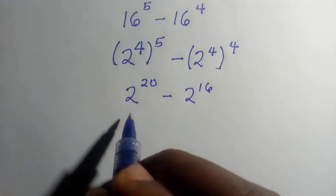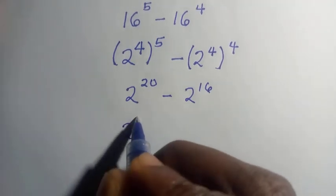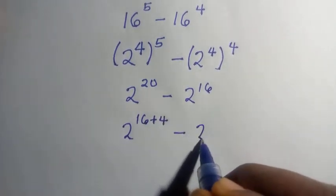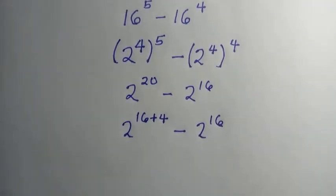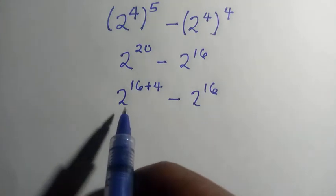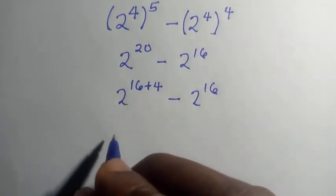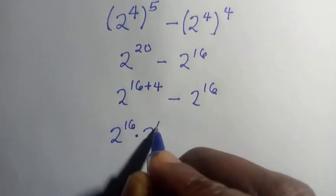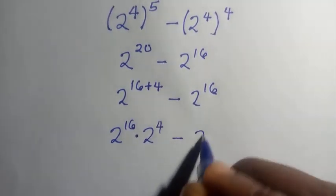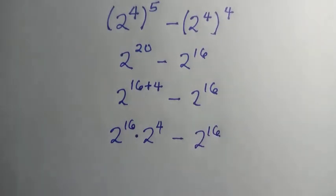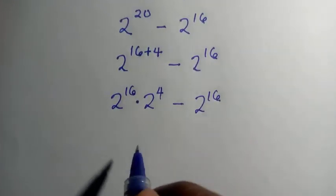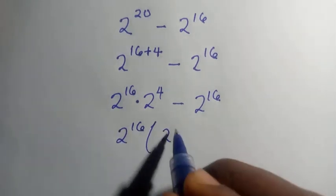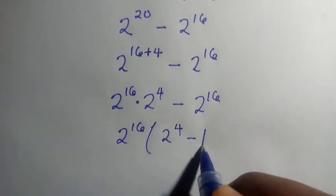We can write 2 to the power of 20 as 2 to the power of 16 plus 4, minus 2 to the power of 16. By the rule of indexes, this becomes 2 to the power of 16 multiplied by 2 to the power of 4, minus 2 to the power of 16. We then factor out 2 to the power of 16, giving us 2 to the power of 16 times open bracket 2 to the power of 4 minus 1.